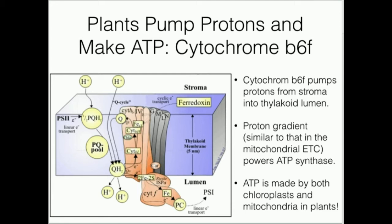By pumping protons from the stroma into the thylakoid lumen, you create a proton gradient. Just like in the mitochondria, that proton gradient powers ATP synthase. This process has a special name — it's called photophosphorylation. It uses the power of photosynthesis to phosphorylate ADP to make ATP, and that's catalyzed by ATP synthase.